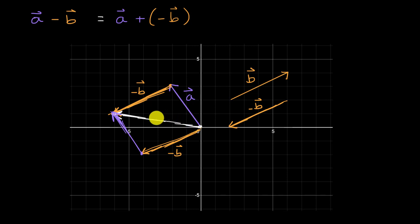And this just helps us appreciate that we could start with negative b and then add vector a to that, or we could start with vector a and then add negative b to that. But either way, you get this white vector right over here, which we can view as the vector a minus vector b. And we're done.